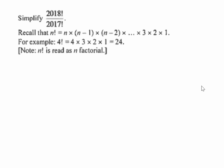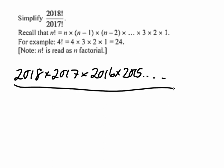So 2018 factorial really just means 2018 times 2017 times 2016 times 2015, all the way down. And 2017 factorial means 2017 times 2016 times 2015 times all the way down.